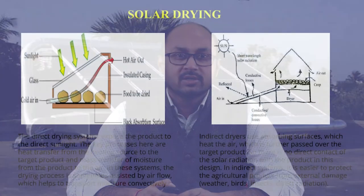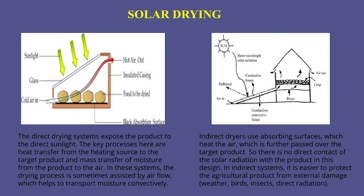There are direct and indirect type solar dryers and some mixed dryers are also there. We will discuss them in this and further lectures. We understand these two types of solar drying with the help of two diagrams — the first is the direct solar dryer and the second is the indirect solar dryer.